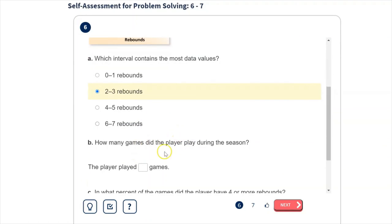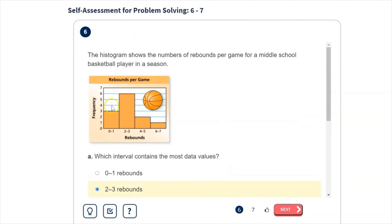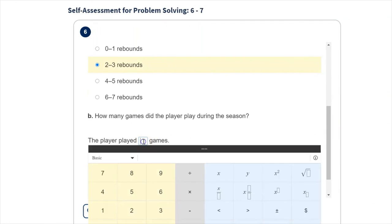Question B says, how many games did the player play during the season? Remember that the frequency here would represent a number of games. So they had three games with zero to one rebounds, six games with two to three, two games with four to five rebounds, and one game with six to seven. So that total, three plus six is nine, plus two is 11, plus one is 12. So 12 total games.